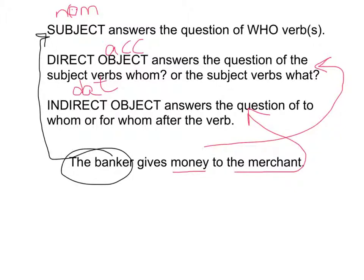So, when we look at our example — the banker gives money — we need the nominative ending for banker. That would be argentarius. Your choices are argentarius, argentario, or argentarium. And the correct answer would be argentarius, because -us is the nominative ending.